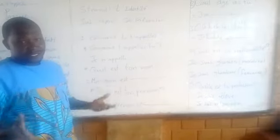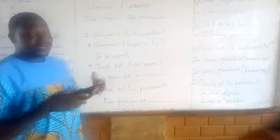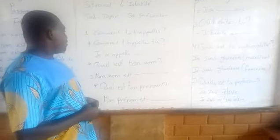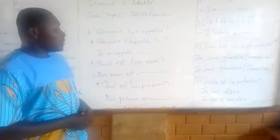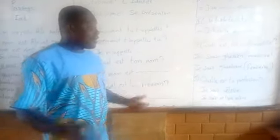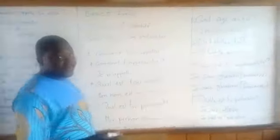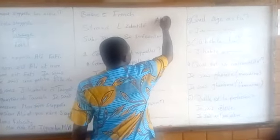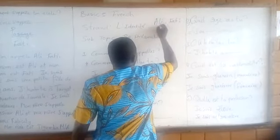There are questions that I will be using here. The first one is 'Comment t'appelles-tu?' — the almighty 'Comment t'appelles-tu?', you all know it. And the answer is 'Je m'appelle' plus your name. Let's take this fellow for instance: Ali Fati.